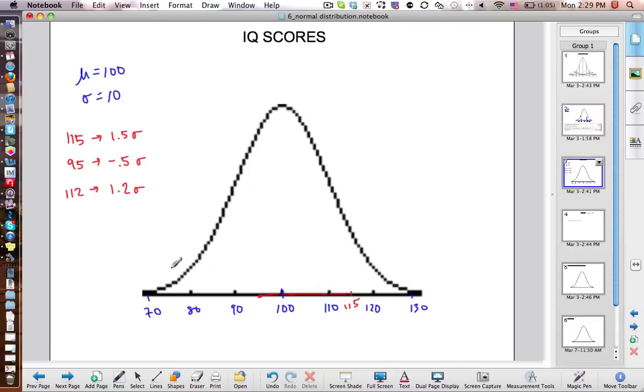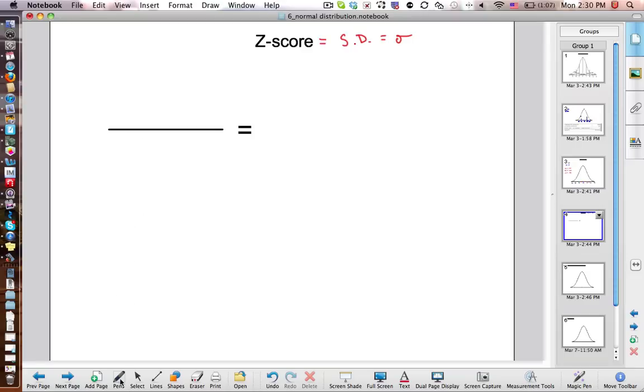So what did we do in order to get these values, these ones that weren't exactly 1, 2, and 3 standard deviations? Well, I think what you probably did is you took a difference here. You said that's 15. From 100 to 115 is 15, and then you divided it by 10 to get 1.5. And if you didn't do that, you did it. You partitioned it into 10s, which is the same as dividing.